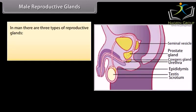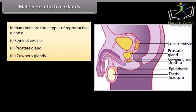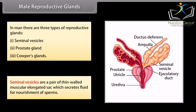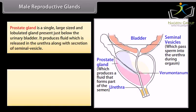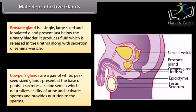In man there are three types of reproductive glands: seminal vesicles, prostate gland, and Cowper's glands. Seminal vesicles are a pair of thin-walled muscular elongated sacs which secrete fluid for nourishment of sperms. The prostate gland is a single, large-sized and lobulated gland present just below the urinary bladder. Cowper's glands are a pair of white pea-seed sized glands present at the base of the penis; they secrete alkaline semen which neutralizes acidity of urine and activates and nourishes sperms.